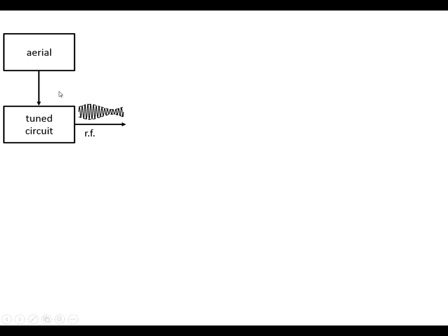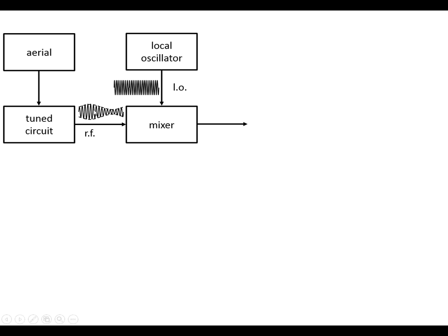We get the tuned circuits which provides rough frequency selection. We get the station sidebands that we want plus some of the neighbouring ones. We put this into the mixer with the local oscillator, which is a high frequency — a frequency which is a fixed frequency higher than the frequency which we tune the tuned circuit to.